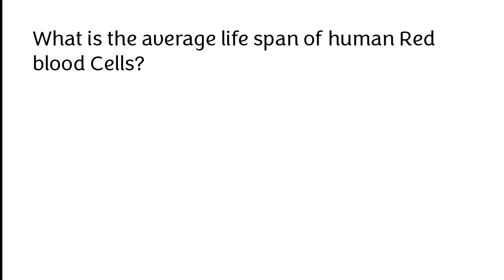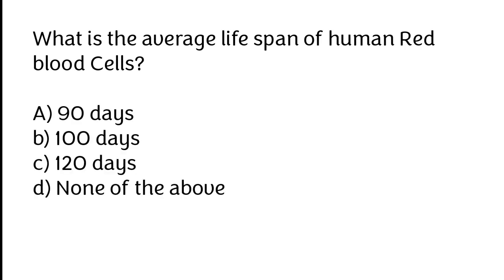What is the average lifespan of human red blood cells? 90 days, 100 days, 120 days, or none of the above. The correct answer is option C. The average lifespan of human red blood cells is about 120 days.